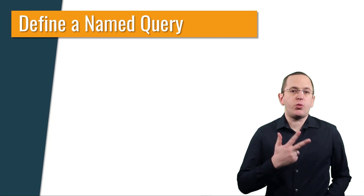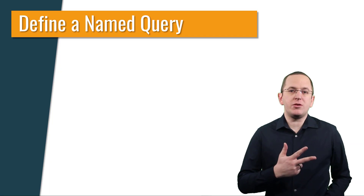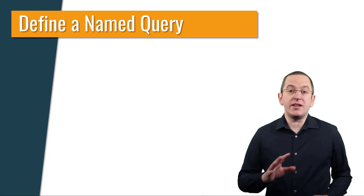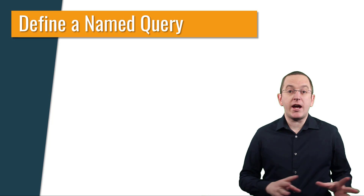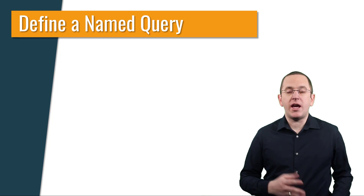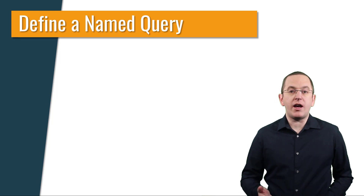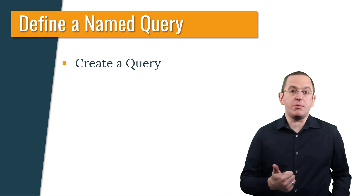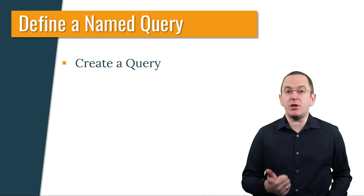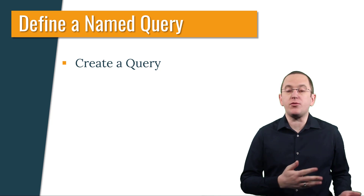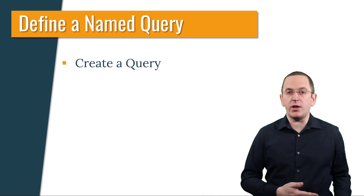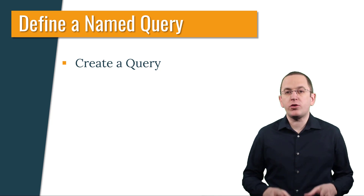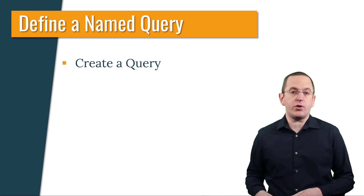There are 3 steps you need to do to create a named query at runtime. Step 1: create a query. This can be done as a JPQL, native, or Criteria query. You can also define additional hints and settings for the query.